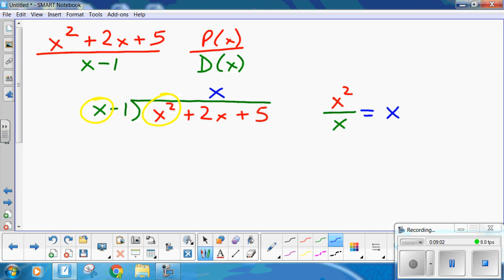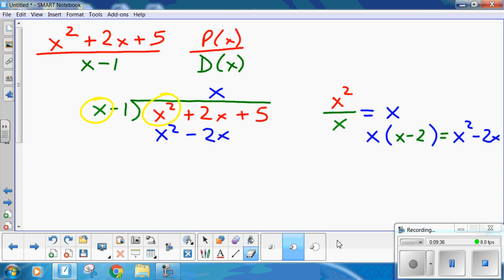Now, just like in long division, x times my divisor is what? x squared minus x. So where does that x squared minus x go? It's x minus 1. So that's x squared minus x. x times 1 is 1, so minus 1 times x is minus x. Now I've got that right.